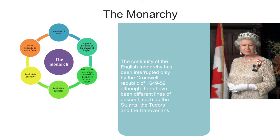The monarch still performs some important executive and legislative duties which are essential to the smooth running of government. These include the summoning, opening and dissolving of Parliament, giving the royal assent or signature to bills which have been passed by both Houses of Parliament, appointing government ministers and other public figures, granting honours, holding audiences with prime ministers, convening meetings of the Privy Council, giving pardons to some convicted criminals, and fulfilling international duties as head of state. In practice, most of these functions are performed by the monarch on the advice of the prime minister or other ministers.